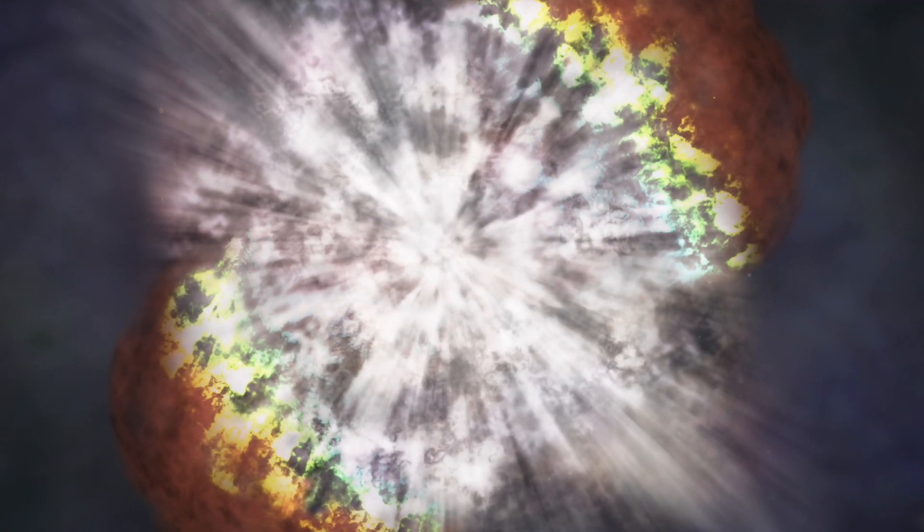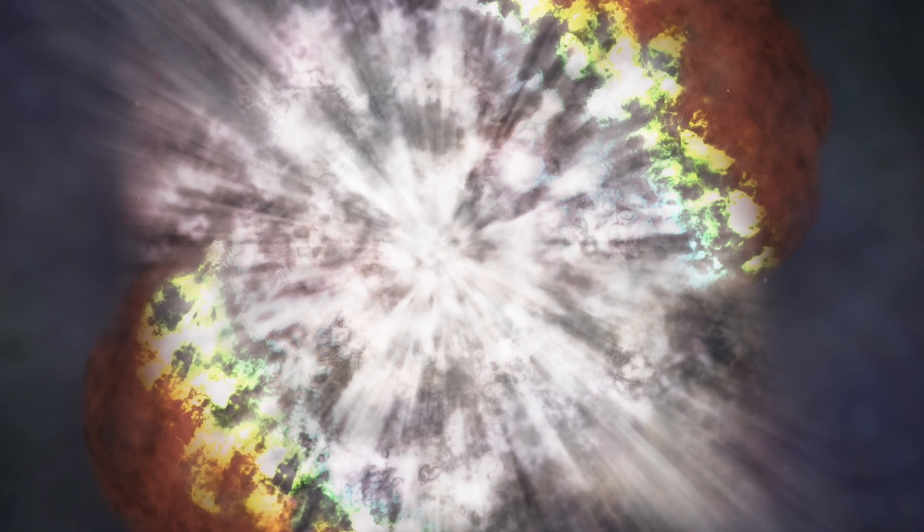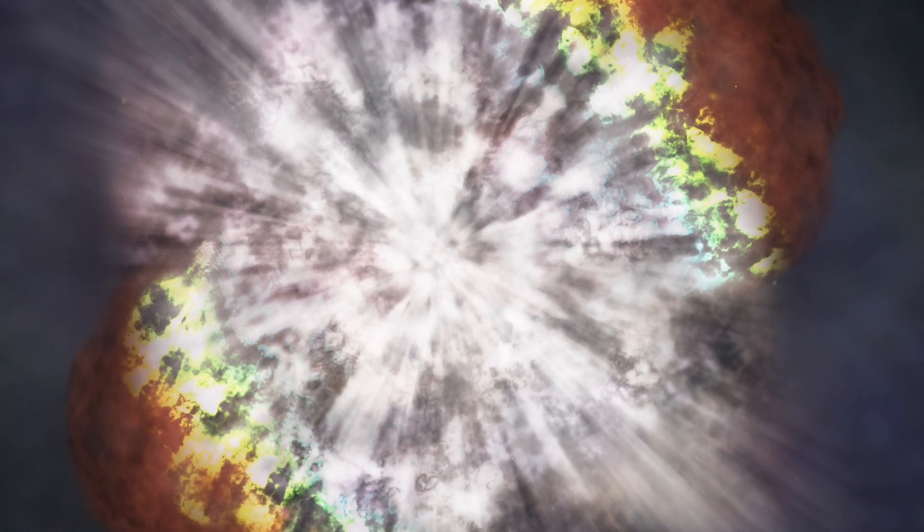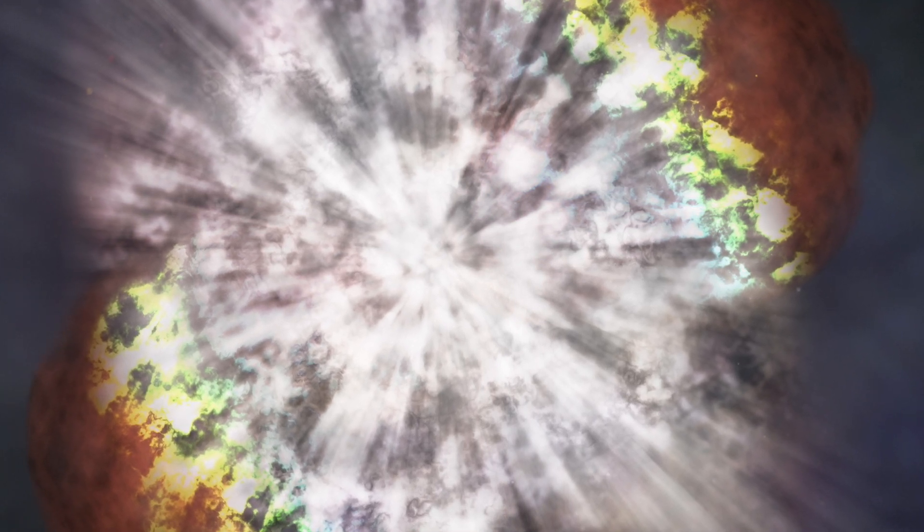A hypernova is a special type of supernova created when a star is at least 40 times the mass of our sun. This then expands the nuclear fuel and then collapses directly into a black hole.